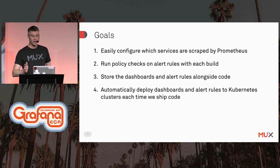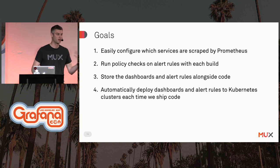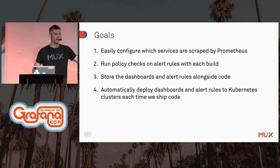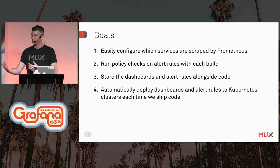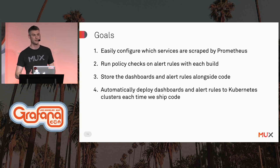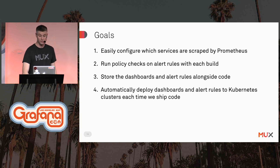Lastly, we wanted to automatically deploy dashboards and alerting rules to Kubernetes clusters every time we ship code. You shouldn't have to manually tweak an alerting rule in production every time the related code is modified. All of this should be automatic — we've got systems to deploy code, so why not use those same systems to update our dashboards and alerting rules?